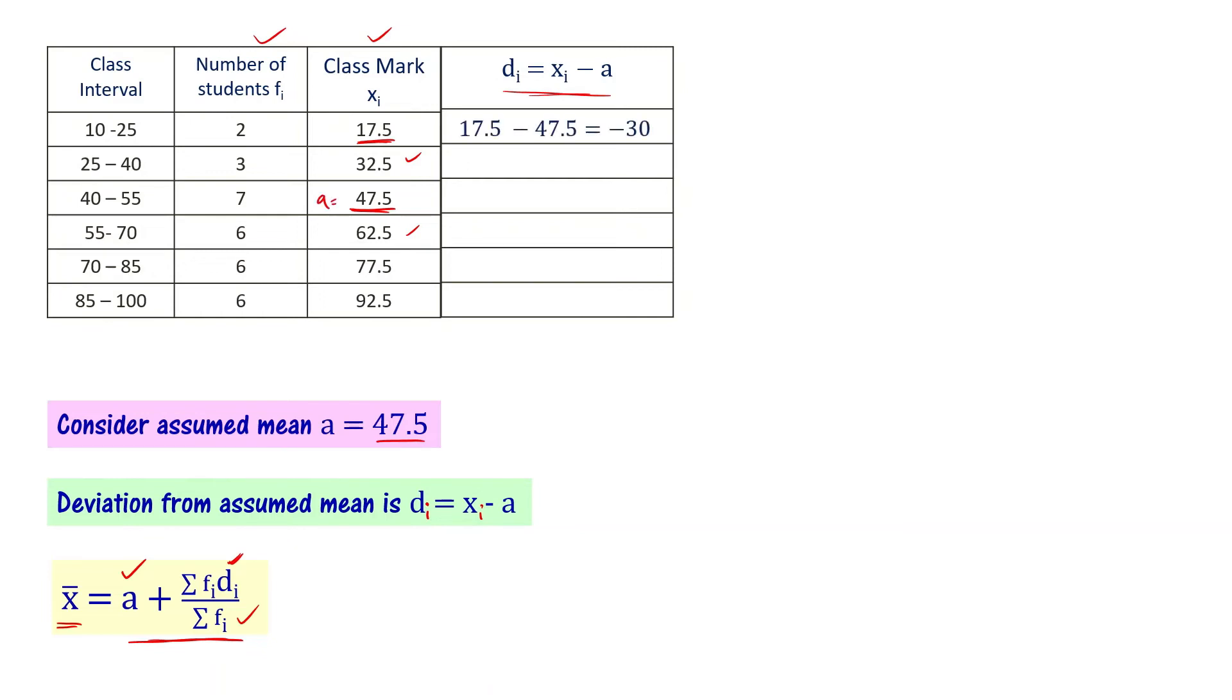di is xi - a. So xi is 17.5 - 47.5 = -30. Then 32.5 - 47.5 = -15. Then 47.5 - 47.5 = 0. Then 62.5 - 47.5 = 15. The next one is 30, and the next one is 45. So the di values are -30, -15, 0, 15, 30, 45.